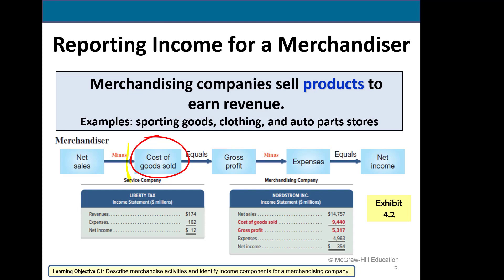Cost of goods sold is the cost of the merchandise. For a merchandiser, we will have our revenue less cost of goods sold, which equals gross profit, and then subtract the remaining expenses to get our net income.